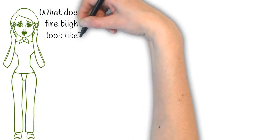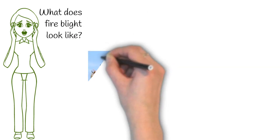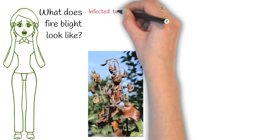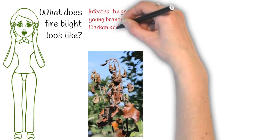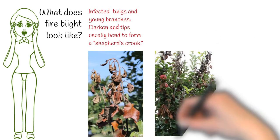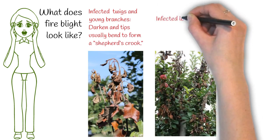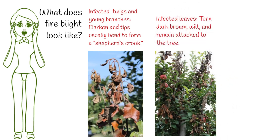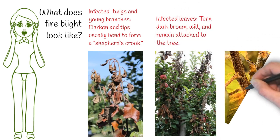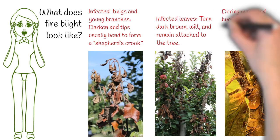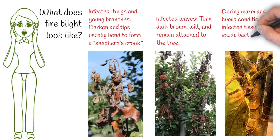What does fire blight look like? Infected twigs and young branches darken and tips usually bend to form a shepherd's crook. Infected leaves turn dark brown, wilt, and remain attached to the tree. During warm and humid conditions, infected tissues may exude bacterial ooze in droplets.